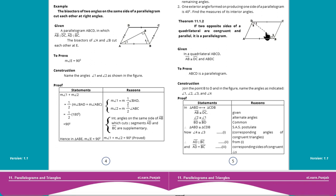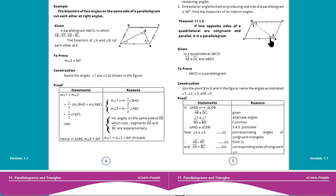Proof میں دیکھیں ہمارے پاس یہاں پہ دو triangles بن رہی ہیں: triangle ABD اور triangle CDB۔ ان کا correspondence لیتے ہیں: triangle ABD corresponds to triangle CDB۔ Given میں AB is congruent to DC۔ Angle 2 is congruent to angle 1 - reason: alternate angles - کیونکہ یہ 2 parallel lines ہیں اور BD ان کو intersect کر رہی ہے، backwards Z بن رہا ہے۔ Side BD is congruent to side BD - reason: common۔ تو ہم نے 3 elements congruent proof کر دیئے۔